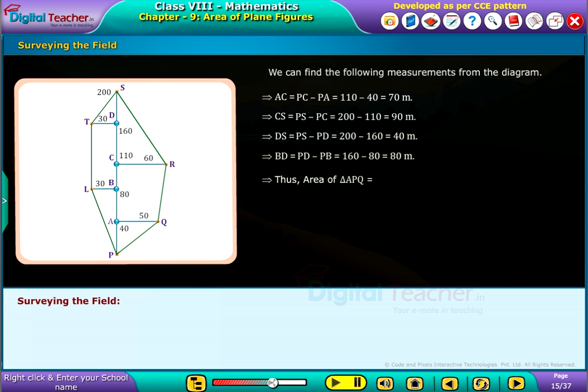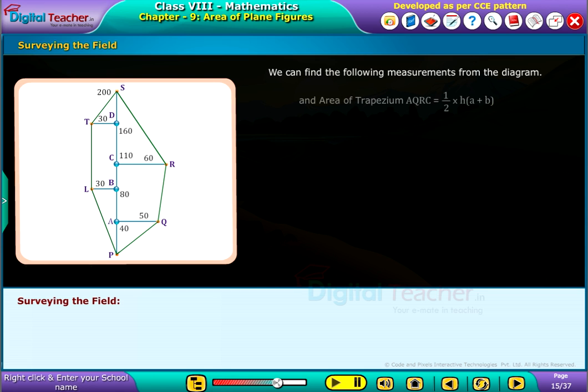Thus area of triangle APQ equals half into b into h equals half into 40 into 50 which equals 1000 square meters. Area of trapezium AQRC equals half into h into a plus b equals half into AC into AQ plus CR which equals half 70 into 50 plus 60. By solving it we get the area of trapezium AQRC equals 3850 square meters.